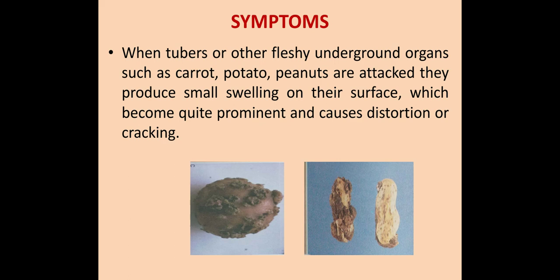When tubers or other fleshy underground organs such as carrot, potato, and peanuts are attacked, they produce small swellings on their surface. As we see in this picture, swellings appear on potato and peanuts, and these swellings are called tubercles — funsi in Hindi. In carrots and beetroot, the taproot becomes dichotomous or bifid.